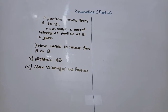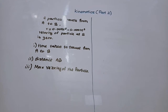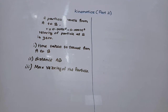Now let's discuss a question. A particle travels from A to B. The velocity expression is v = 0.009t² − 0.0001t³. The velocity of the particle at B is 0. Part 1: find the time taken to travel from A to B. Part 2: find the distance AB. Part 3: find the maximum velocity of the particle.